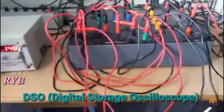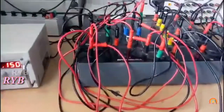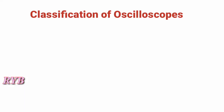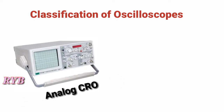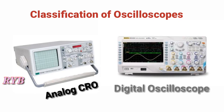Just like any other measuring equipment, oscilloscopes can be divided into two categories: analog and digital oscilloscopes. Both types have positives and negative sides as well as unique characteristics, so let us take a look at each type more closely.